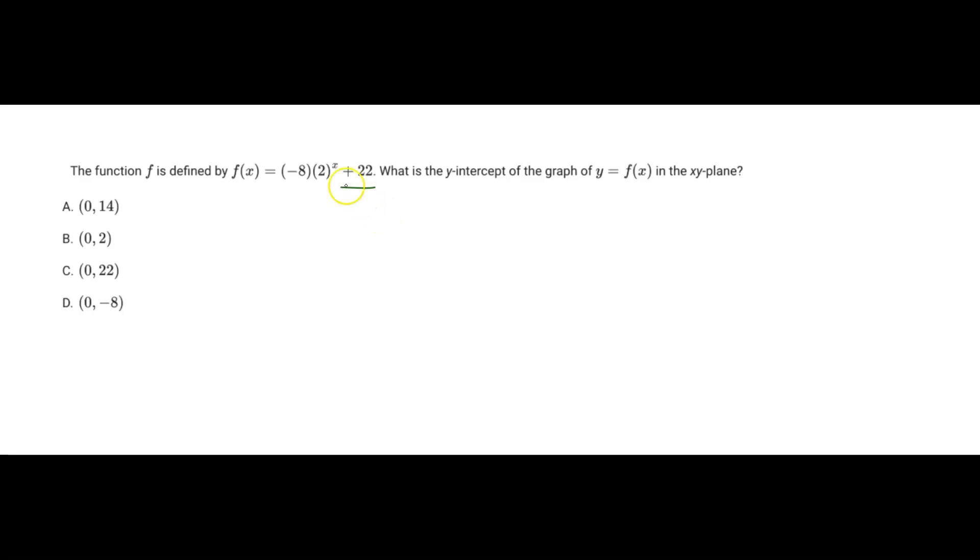So if you look at this more closely, 2 to the power of 0 is really just 1, right? And so 1 is going to be multiplied by negative 8, so 1 times negative 8, and that gives us negative 8.